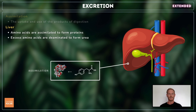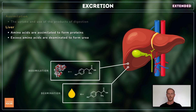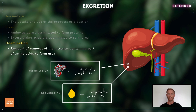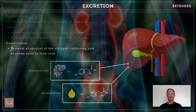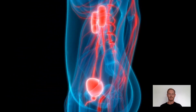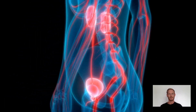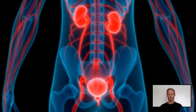Unlike carbohydrates and fats, excess amino acids cannot be stored, so they're either converted to glucose or broken down by the liver in a process called deamination. Deamination is the removal of the nitrogen-containing part of amino acids to form urea, which passes into the bloodstream and is filtered out by the kidneys. It's important that urea is excreted in this way as it can be extremely poisonous if allowed to accumulate.